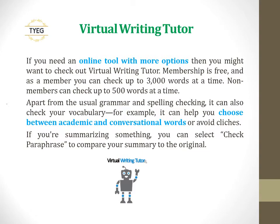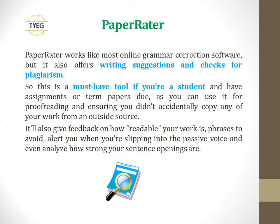Paper Rater works like most online grammar correction software, but it also offers writing suggestions and checks for plagiarism. So this is a must-have tool if you're a student with assignments or term papers due, as you can use it for proofreading and ensuring you didn't accidentally copy any of your work from an outside source. It'll also give feedback on how readable your work is, phrases to avoid, alert you when you're slipping into the passive voice, and even analyze how strong your sentence openings are.